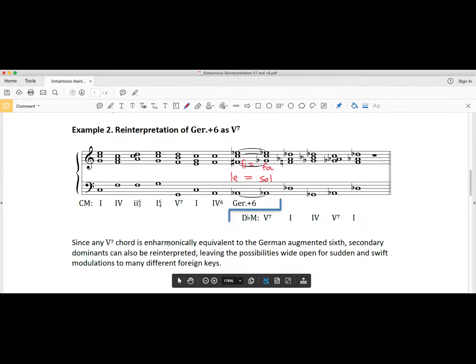Let's listen to this example. So swift, so smooth and totally a distantly related key area. C has no sharps, no flats. D flat major has five.